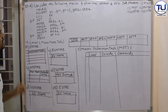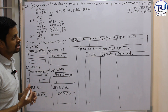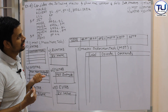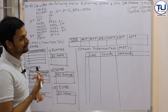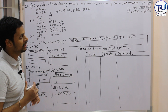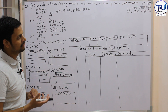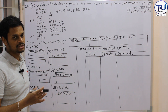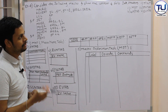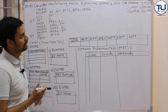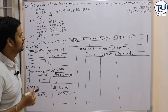Example number 4. Consider the following macro and show the content of the following data structures. They are asking us to draw 5 data structures: first is MNT — the macro name table; second is MDT — the macro definition table; third is PN table — the parameter name table; fourth is KPD — keyword parameter with default table; and fifth is EVN table — the expansion variable name table.